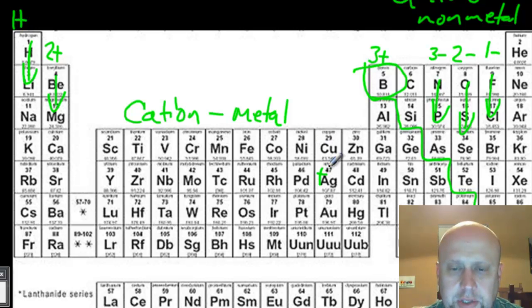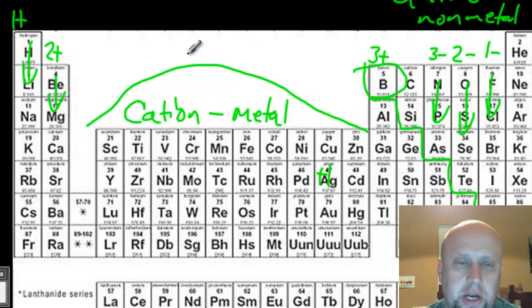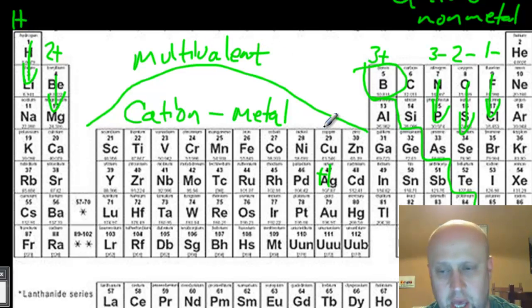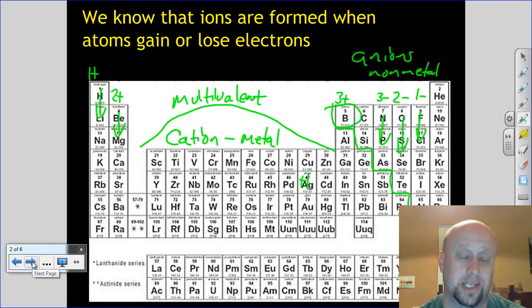Silver typically also has a plus 1. We know that one pretty certain. There's some others that are pretty common. But in the whole, the transition metals, the D block here, are what we call multivalent. And what multivalent means is that they can have different charges, and we'll come back to that when we get to naming. It's not really going to impact us all that much at this point. But just keep in mind, they can have more than one charge, or as we'll talk about in the next lesson, they can have more than one oxidation state.